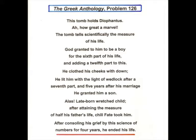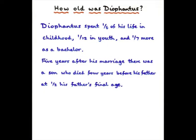How old was Diophantus when he died? The tomb tells scientifically the measure of his life. The problem states that Diophantus spent one-sixth of his life in childhood, one-twelfth in youth, and a seventh more as a bachelor. Then five years after his marriage, there was a son who died four years before his father, at half his father's final age. How old was his father when he died?